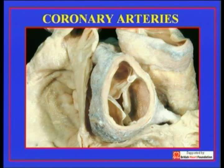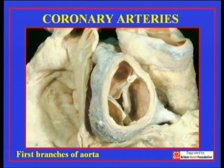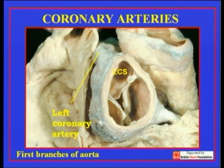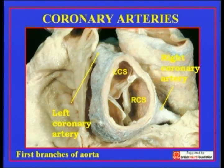Looking first at the coronary arteries, I've closed in on the aortic root, and what you can clearly see is that the right and left coronary arteries are the first branches of the aorta. Arising superiorly and to the left, we have the left coronary artery, permitting us to name the sinus of the aorta adjacent to the pulmonary trunk as the left coronary sinus. Inferiorly and to the right, the right coronary artery, permitting us to name this second aortic sinus adjacent to the subpulmonary infundibulum as the right coronary sinus.